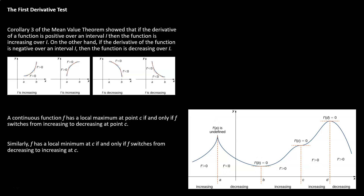Corollary 3 of the mean value theorem showed us that if the derivative of a function is positive on an interval then the function is increasing, and if the derivative is negative then the function is decreasing. We have a few pictures here where we've drawn a function and found a couple of tangent lines showing that the slope is positive for an increasing function and negative for a decreasing function.